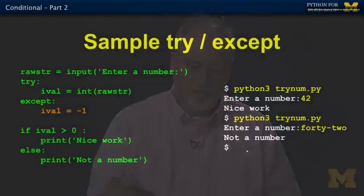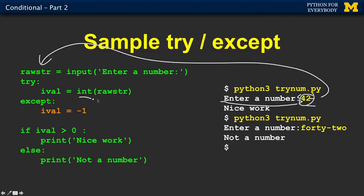So here is a more practical example where we're going to read a number from the user and print out either nice work or not a number. And so we take an input statement which stops and waits for us to type, and then we type 42, and then 42 goes into roster. And then we know that this int is dangerous. And this roster came from the user, whatever the user typed. And so we put it in the try block, and if it's 42, it converts, and it says IVAL is greater than zero, we print it out. So it says nice work.